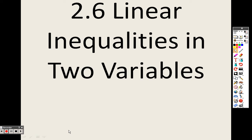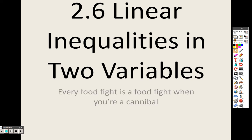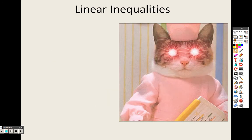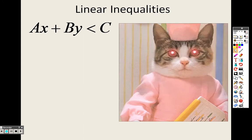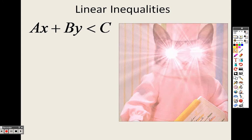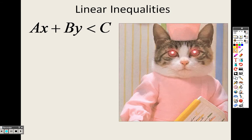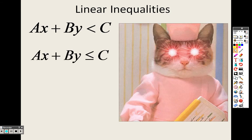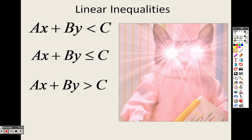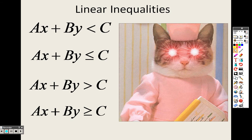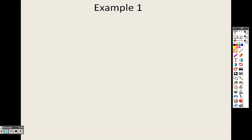2.6 linear inequalities in two variables. We are going to learn how to graph inequalities on a coordinate plane. You can have AX plus BY less than C, less than or equal to C, greater than C, or greater than or equal to C — four forms total. We are going to figure out how to graph all of those.